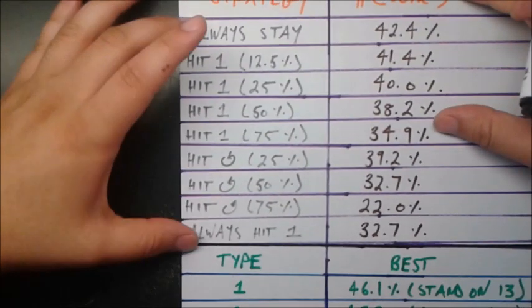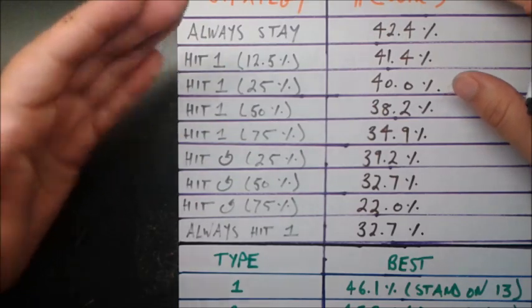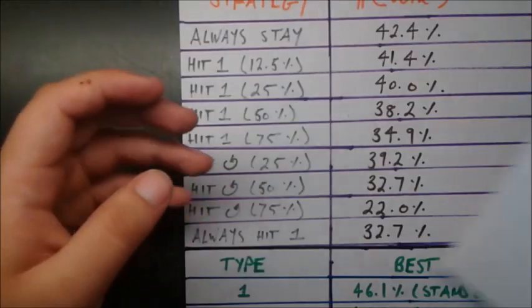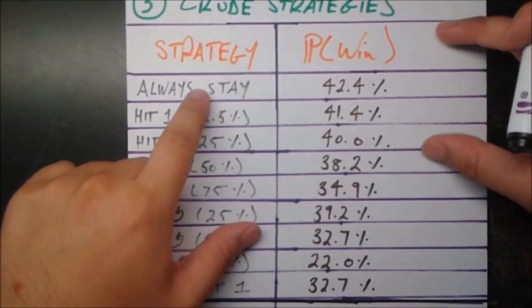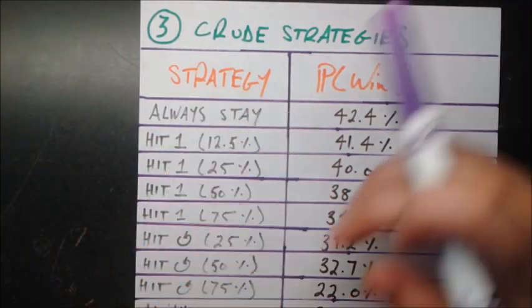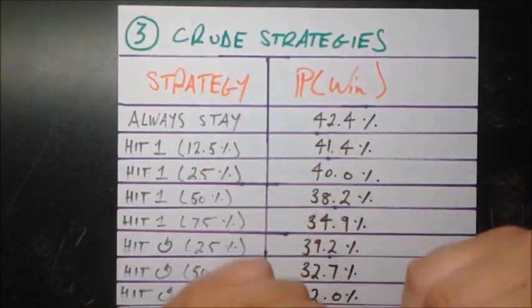So we have many different ones of these and these are mostly for kind of like a control. Like when you're doing an experiment, you want a control. We want to see if the probabilities we're getting here are actually any better than just some stupid robot that's just playing according to some rule without even looking at its cards. So for example, always stay. When you do the 10,000 runs of this, we never took a card ever. We just stayed with our initial cards. Under that regime, we win 42.4% of the time.